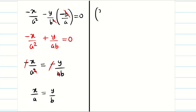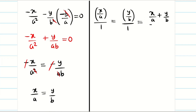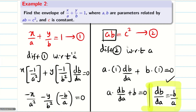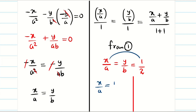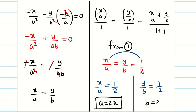Now we apply our technique. Write x/a = y/b = (x/a + y/b) / 2. From equation 1, x/a + y/b = 1. Therefore x/a = y/b = 1/2. Taking the first and third parts: x/a = 1/2 gives a = 2x; similarly y/b = 1/2 gives b = 2y.